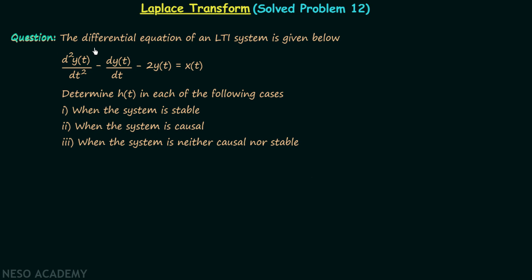According to the question, the differential equation of an LTI system is given. We are required to determine h(t), which is the impulse response of the LTI system, in each of three cases. In case one, find h(t) when the system is stable. In case two, find h(t) when the system is causal. In case three, find h(t) when the system is neither causal nor stable.